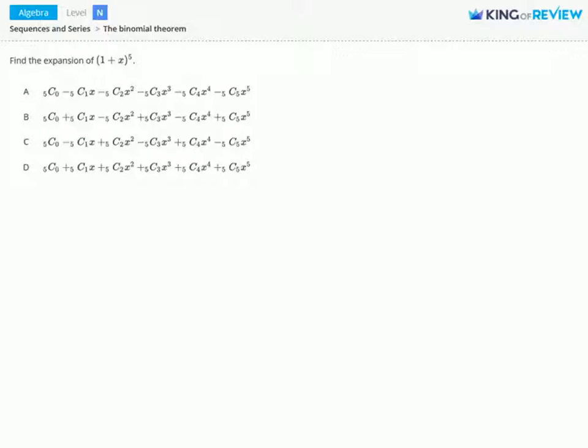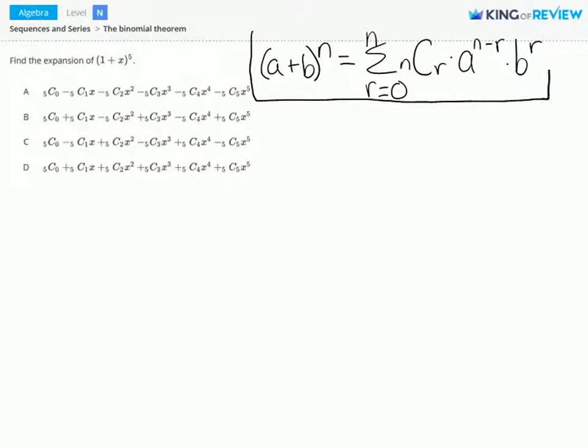To solve this problem we'll use the binomial theorem. This is a plus b to the nth power is equal to the sum from r equals 0 to n of nCr times a to the n minus r power times b to the r power. So this is the theorem we'll use to solve our problem.